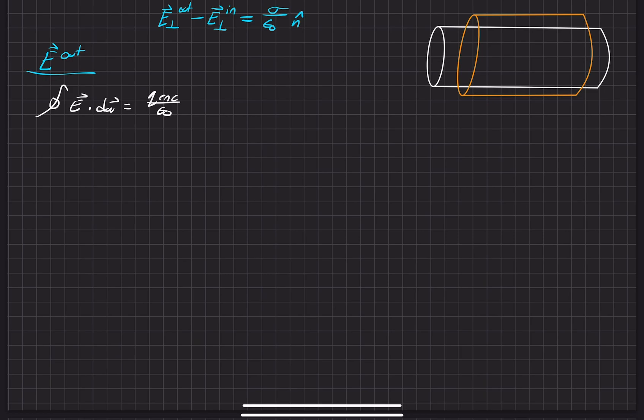And so what we can do is, once we look at the Q that's enclosed, we know that the charge that's enclosed is equal to the surface charge density that's enclosed times the area of our Gaussian, or the area that's enclosed of the tube. And one thing I didn't mention is that the tube has a radius of R,